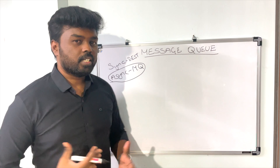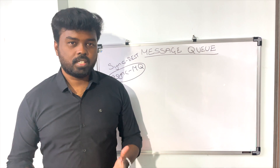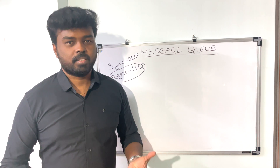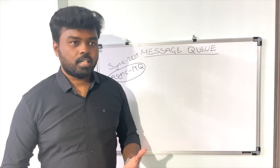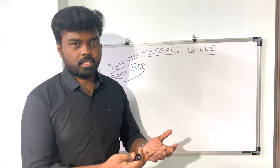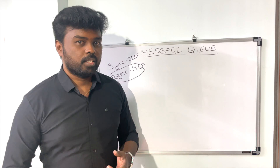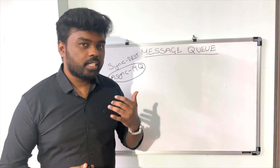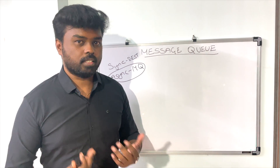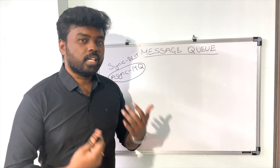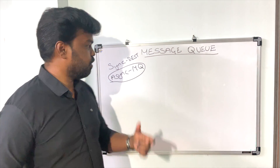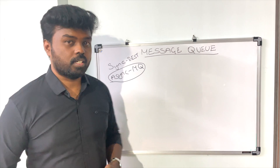To explain this concept better using real-world examples, consider you are making a phone call to someone. In the call, you might be asking a question to the person at the other end. You have to wait in the phone call until the other person answers you, and once you get the answer, you end the call. That's a good example of synchronous communication.